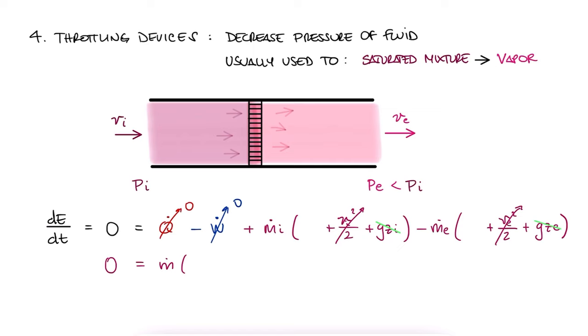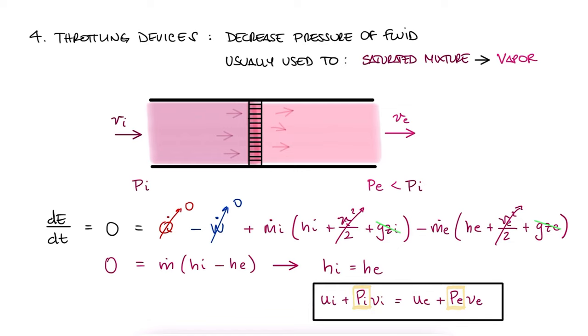The remainder of this equation is telling us that the enthalpy at the inlet is equal to the enthalpy at the exit. And since enthalpy is internal energy plus PV, we use this expression, in combination with any knowledge we might have about the fluid, to solve for either pressure, specific volume, or specific internal energy.